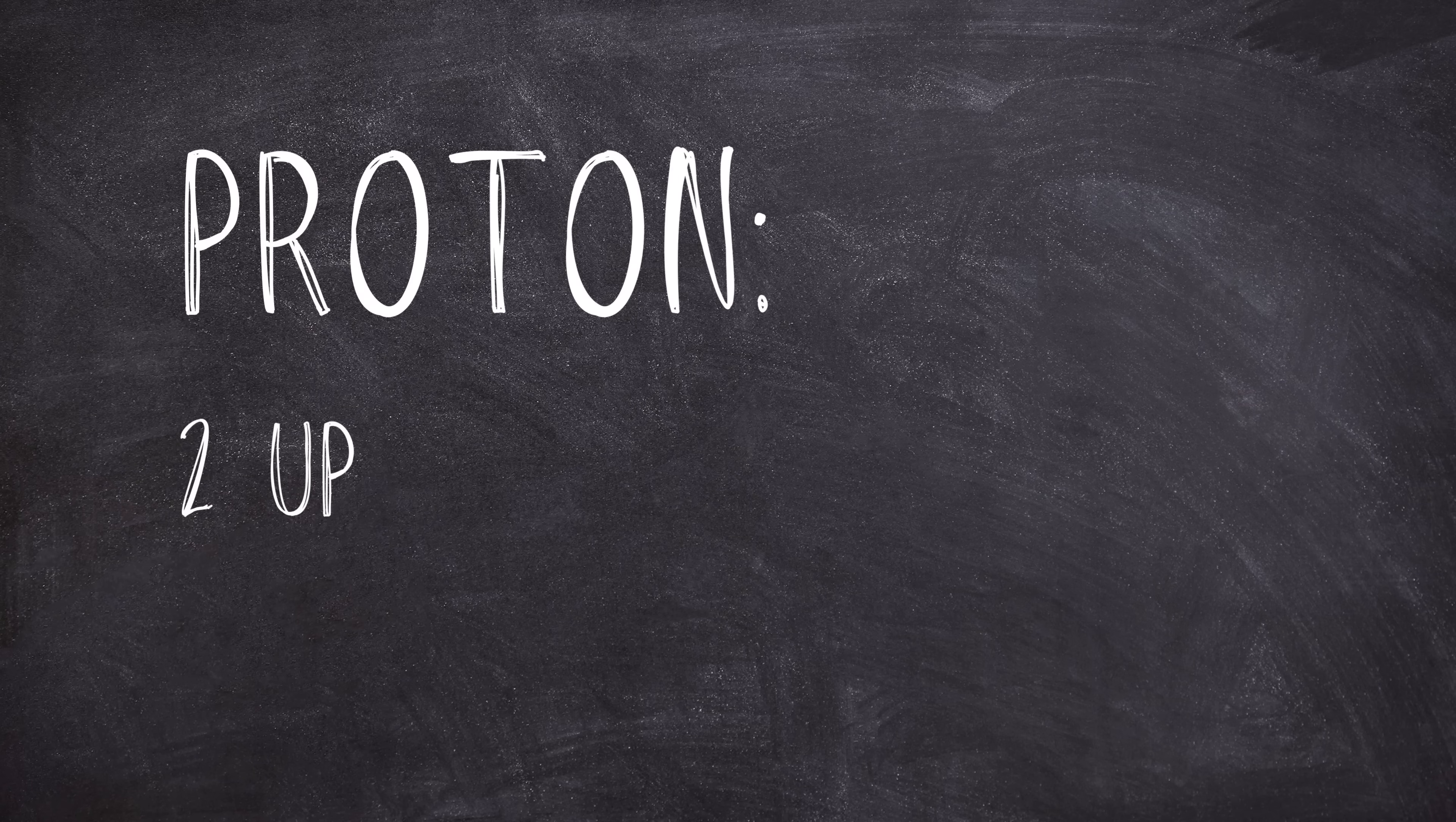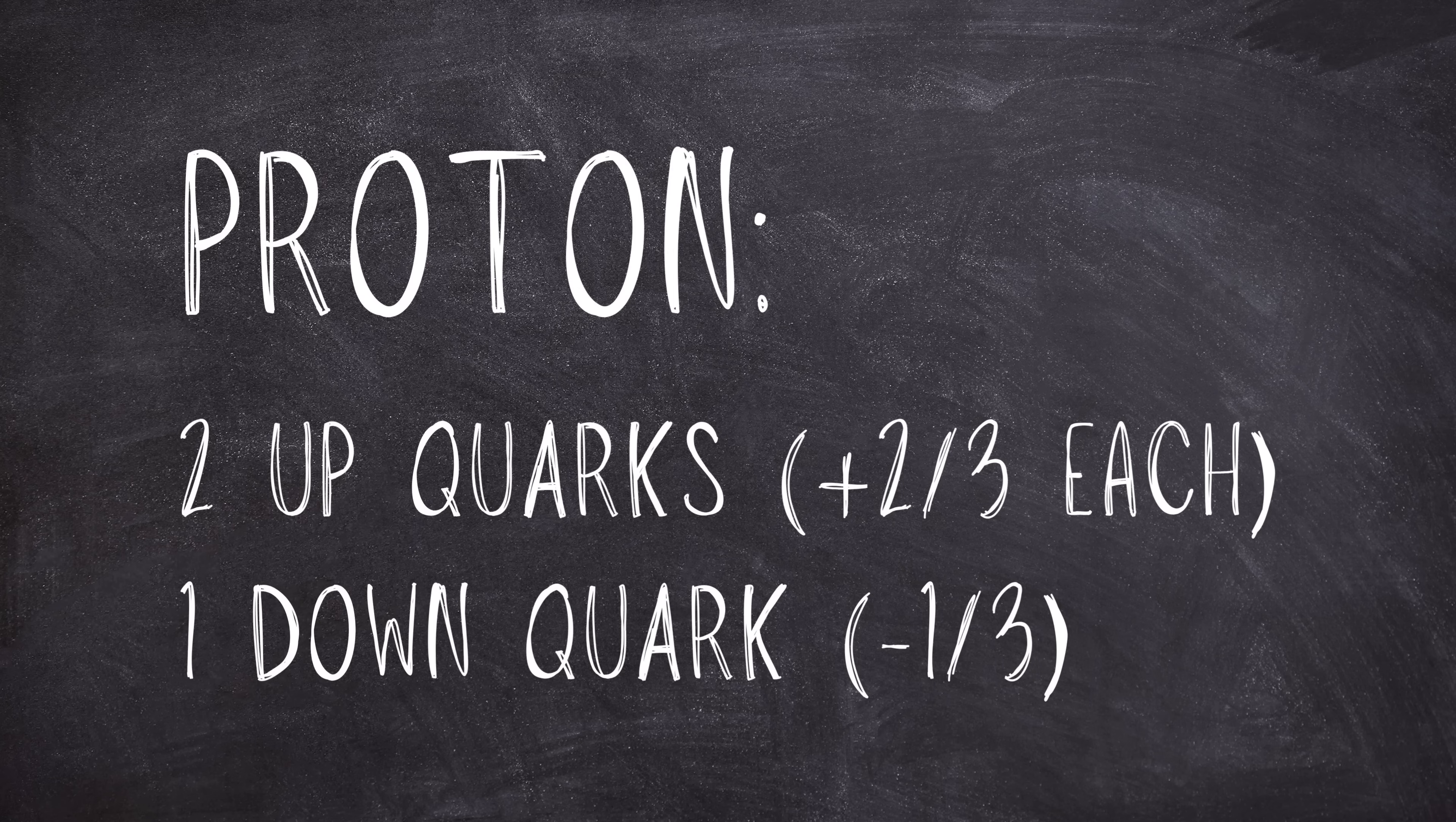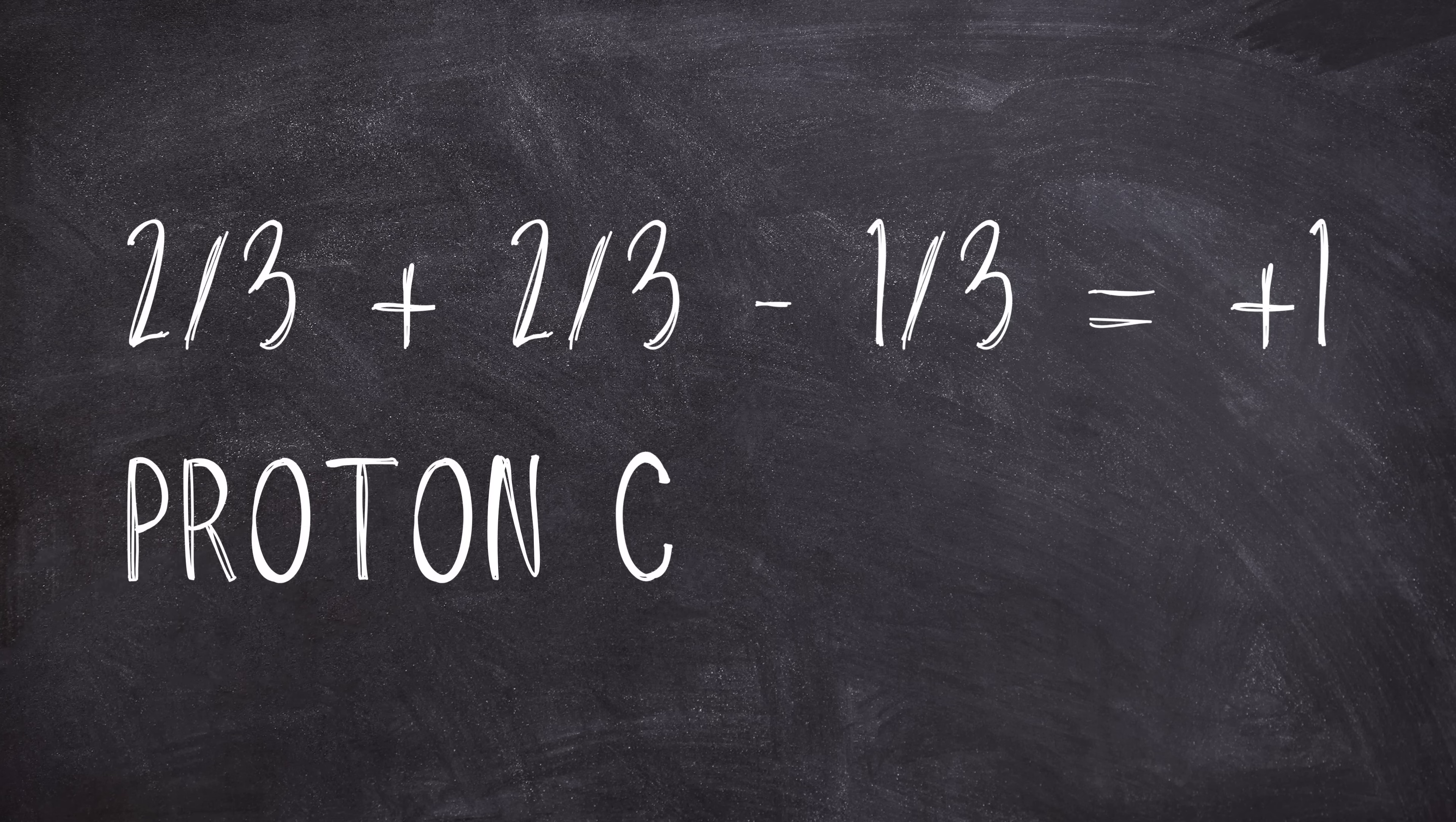Protons are made up of two up quarks, each with a charge of positive two-thirds, and one down quark with a charge of negative one-third. Adding these charges together gives us two-thirds plus two-thirds minus one-third equal positive one, which is the overall charge of a proton.